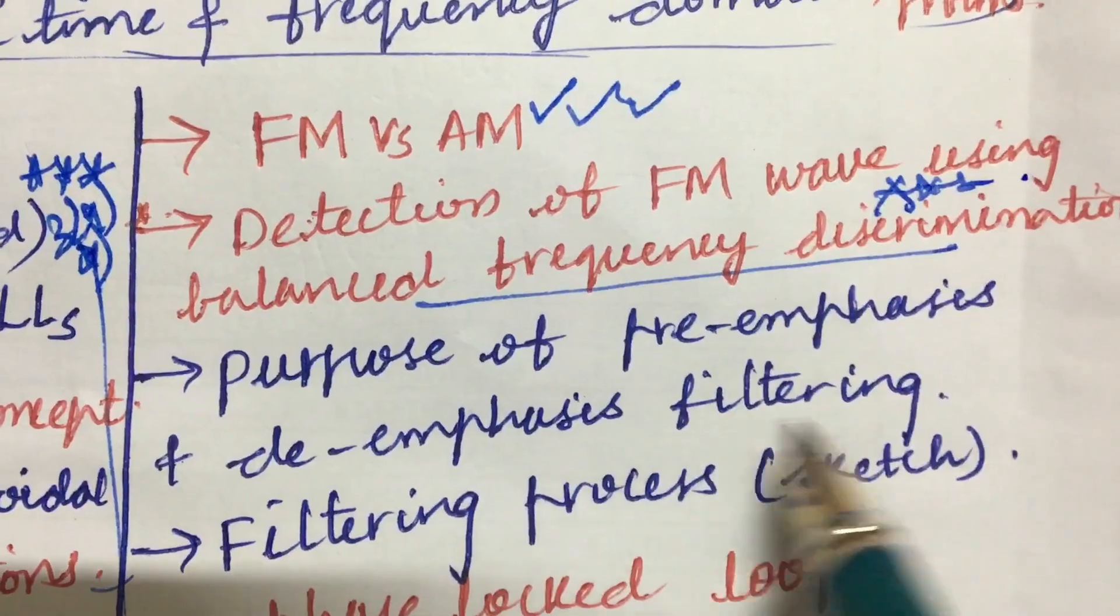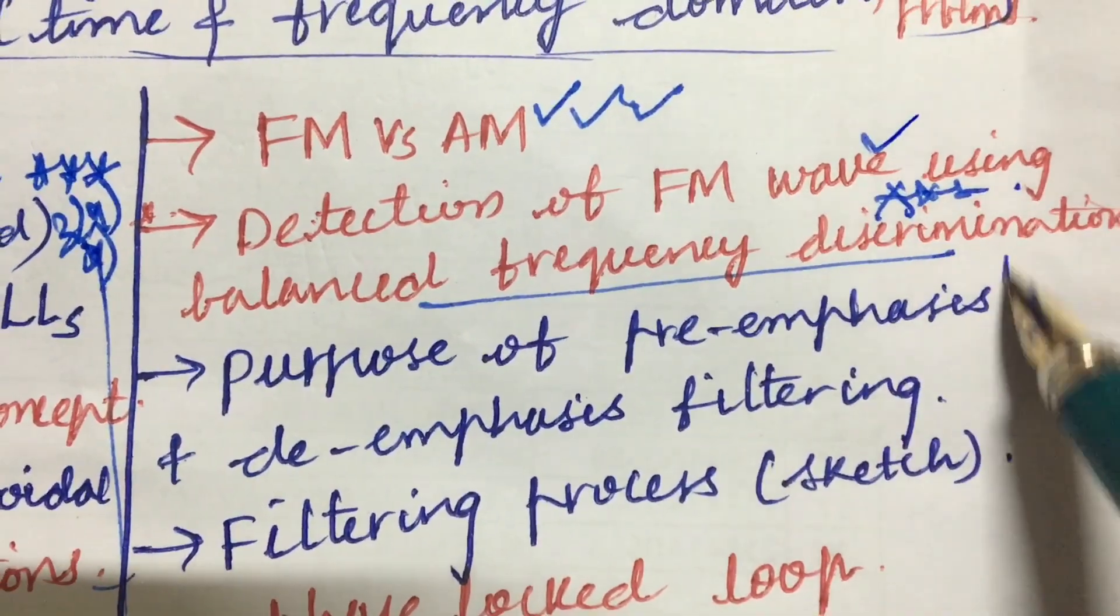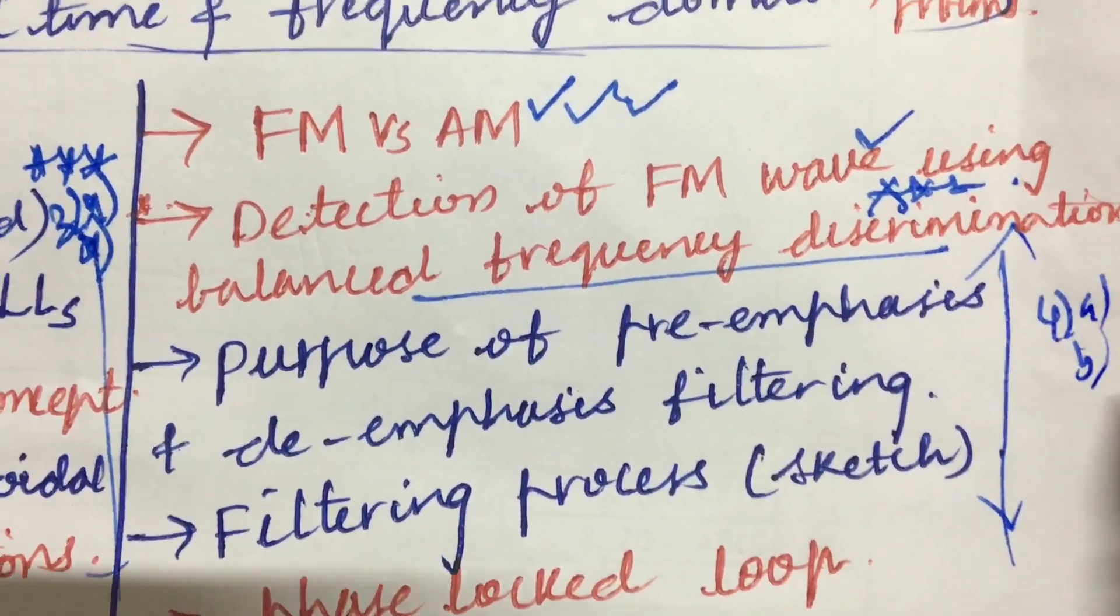And the purpose of pre-emphasis and de-emphasis filtering and filtering process, sketch it. And phase lock loop you can expect this question for sure, and from this part we can expect 4A as well as 4B.